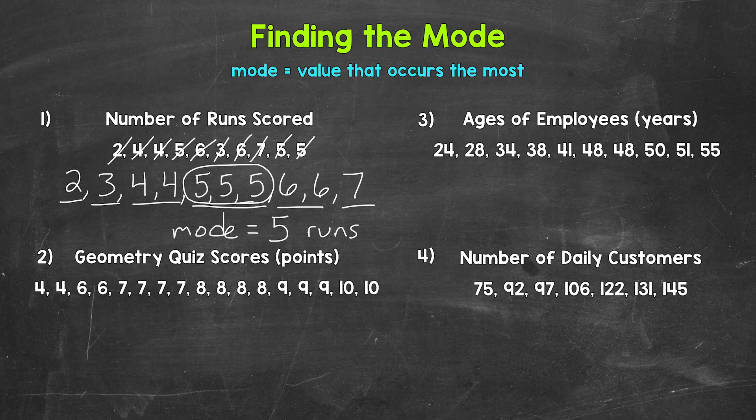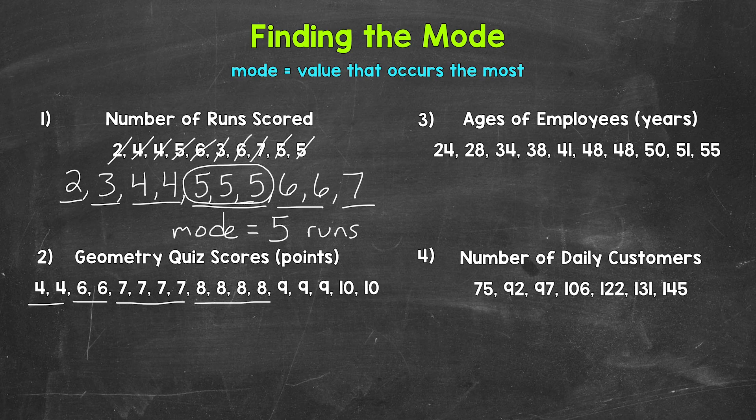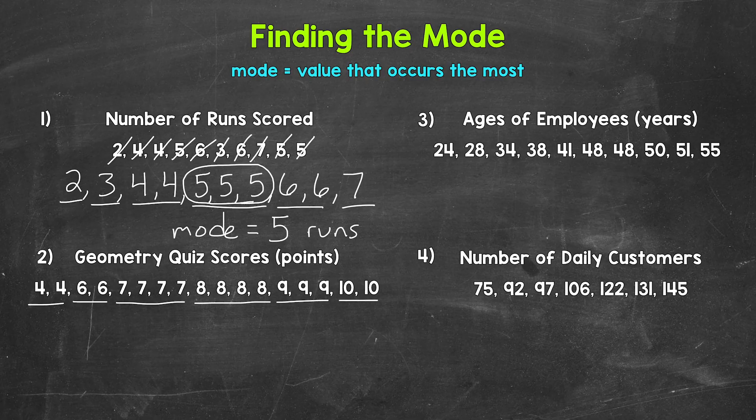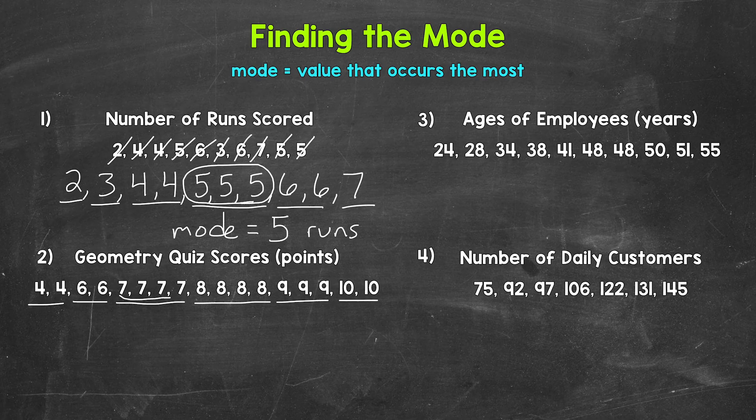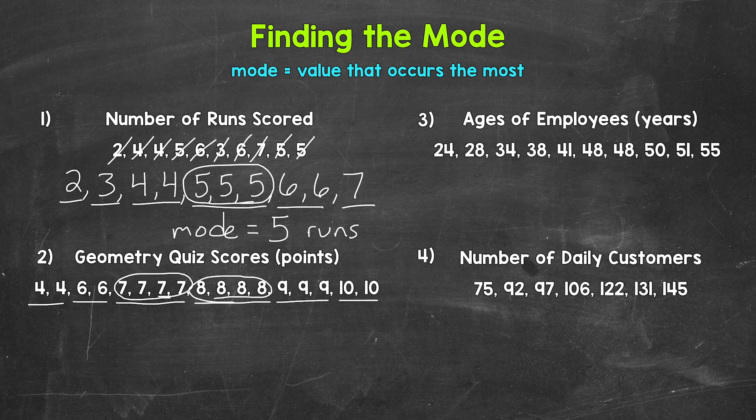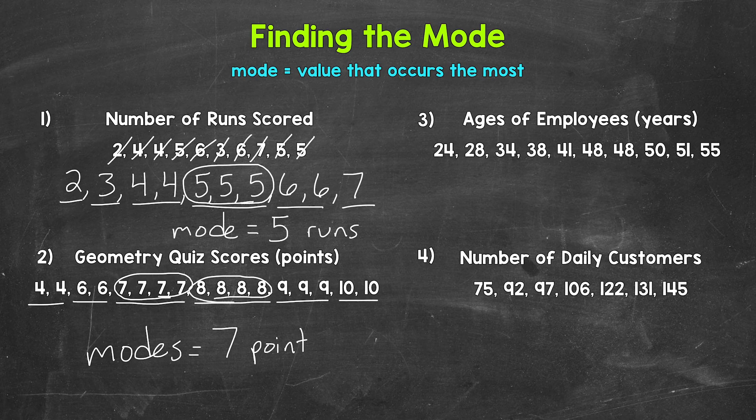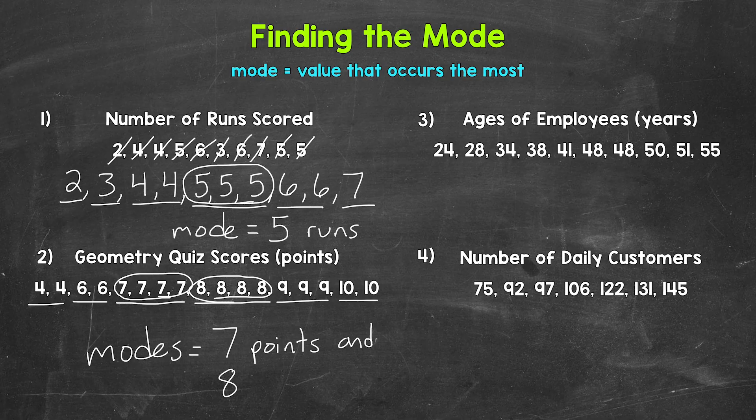Let's move on to number 2, where we have a class's geometry quiz scores out of 10 points. So 2 students earned 4 points, 2 students earned 6 points, 4 students earned 7 points, 4 students earned 8 points, 3 students earned 9 points, and 2 students earned 10 points. So which scores occurred the most? Well, 7 occurred 4 times and 8 occurred 4 times. So we have a tie, so to speak. Both 7 points and 8 points occurred the most. So our modes are 7 and 8 points.